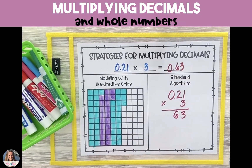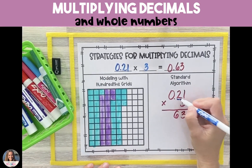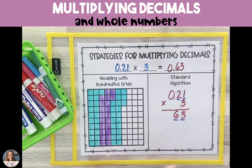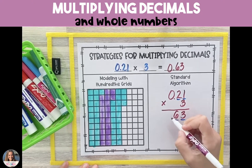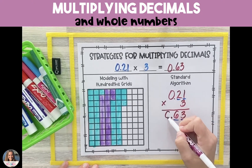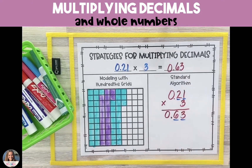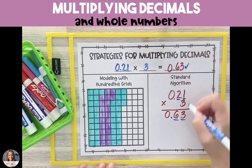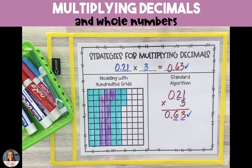Since 21 hundredths has two places to the right of the decimal point and the 3 has zero, our final product will have two digits to the right of the decimal point. So our final answer is 63 hundredths.